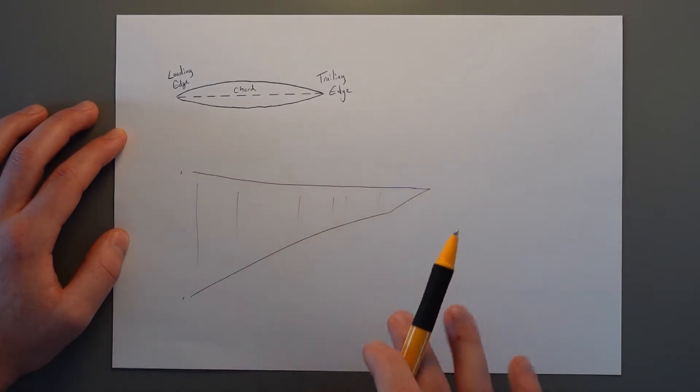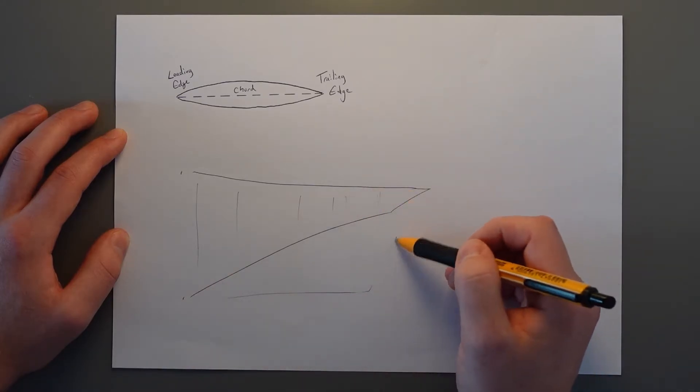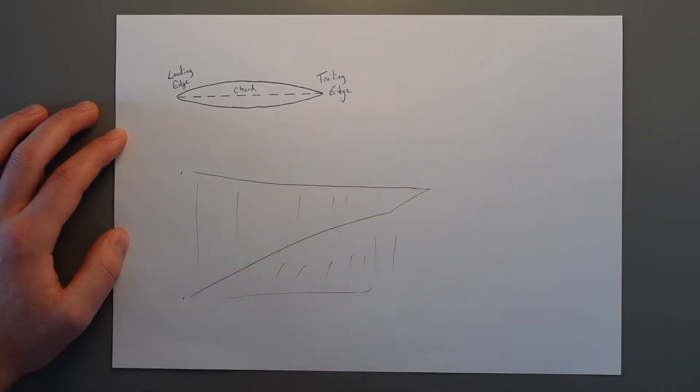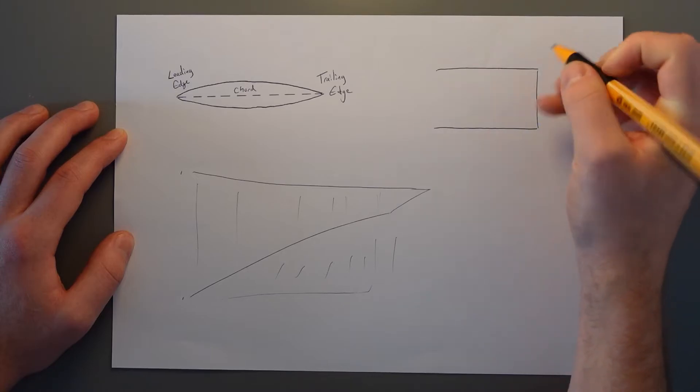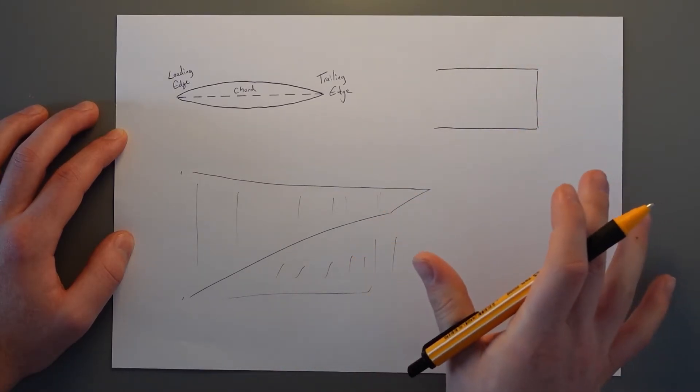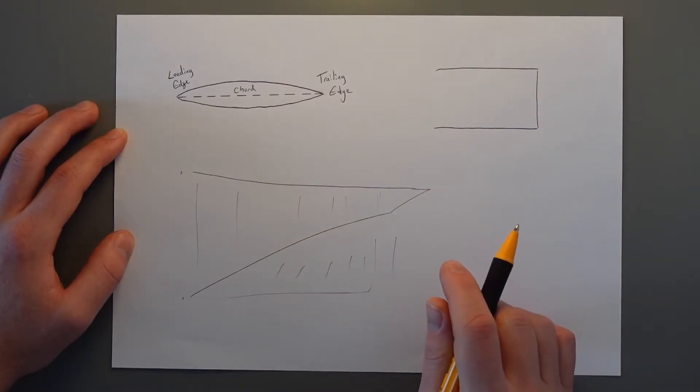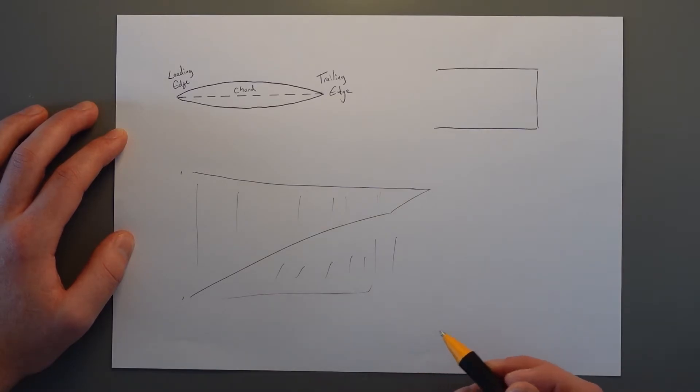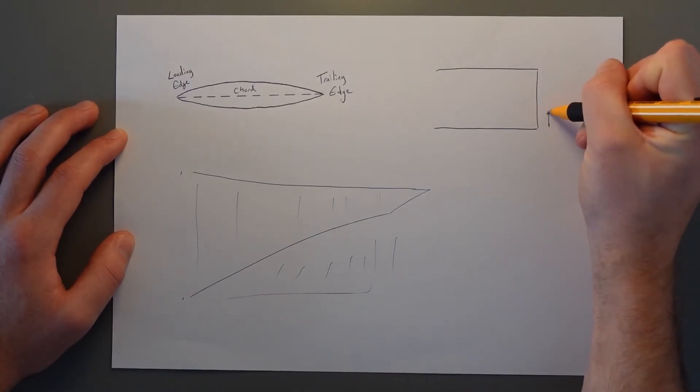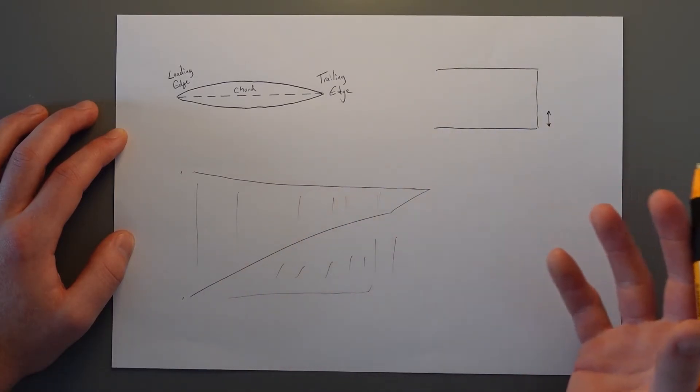So using this concept of the mean aerodynamic chord, we essentially take an average of all these different lengths and equate this wing into something that looks a lot more square shaped. This is our mean wing and from that we take our mean aerodynamic chord. So our centre of gravity, our centre of pressure are usually described as a percentage figure along this fictional wing or this mean aerodynamic chord.